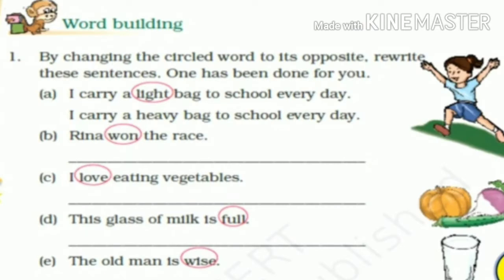Now let's do some word building. By changing the circled words to their opposites, rewrite these sentences. One has been done for you. The circled words in each sentence have to be changed to their opposites. For example: I carry a light bag to school every day — here 'light' is circled, so we write the opposite: I carry a heavy bag to school every day. In the same manner, we have to do the remaining four sentences. Let us read them.